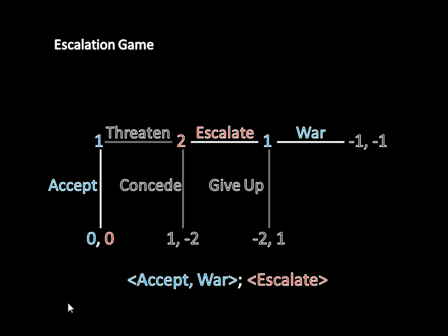Whenever you're writing out a subgame perfect equilibrium, remember to write everyone's strategies both on and off the equilibrium path of play. The easiest way to check if you're doing it right is to count the number of strategies you write down. Here we have: accept as 1, war as 2, and escalate as 3. Make sure that matches the number of decision nodes in the game — there's 1 decision node here, 1 here, and 1 here. That's 3 decision nodes, and we have 3 strategies written out: 1 strategy for every decision node. You have to have that whenever you're writing a subgame perfect equilibrium.